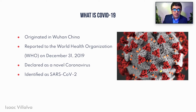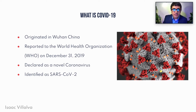COVID-19 is a pneumonia of unknown etiology that originated in Wuhan City, Hubei Province, China. The first signs of COVID-19 were reported to the World Health Organization on December 31st, 2019. The Chinese authorities declared COVID-19 as a novel coronavirus. Coronaviruses are a type of virus that come in many different kinds, and some cause diseases in both humans and animals. COVID-19 is a newly identified type of coronavirus identified as SARS-CoV-2, better known as COVID-19.